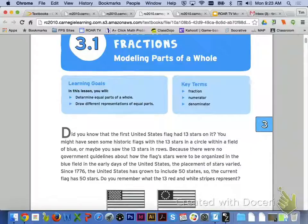Let's take a look at the lesson introduction for today. Did you know that the first U.S. flag had 13 stars on it? You might have seen some historic flags with the 13 stars in a circle within a field of blue, or maybe you saw the 13 stars in rows. Because there were no government guidelines about how the flag stars were to be organized in the blue field in the early days of the U.S., the placement of stars varied. Since 1776, the U.S. has grown to include 50 states, so the current flag has 50 stars. Do you remember what the 13 red and white stripes represent? Talk about that quickly with your group members before we get started.